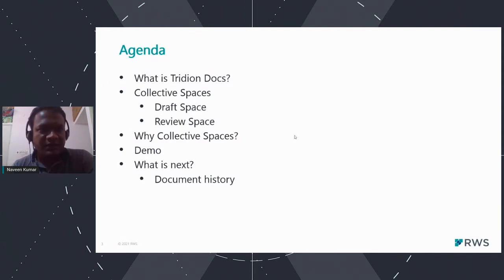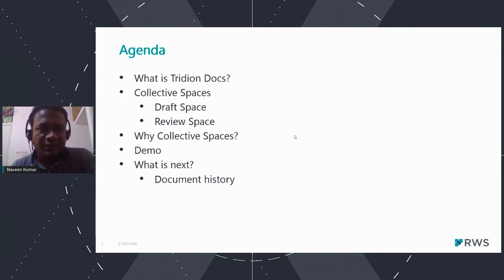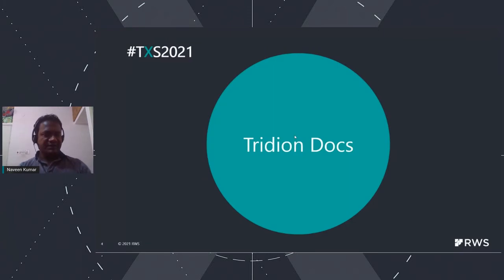The agenda for the next 30 to 35 minutes: first, I'll give an introduction about 3DN Docs for people who may not know it. Then we'll move on to collective spaces, where we'll discuss draft space and review space. We'll also see the reason or the need for collective spaces, have a quick demo on collective spaces and review spaces, and finally look at what's in the pipeline for 3DN Docs in the latest releases.